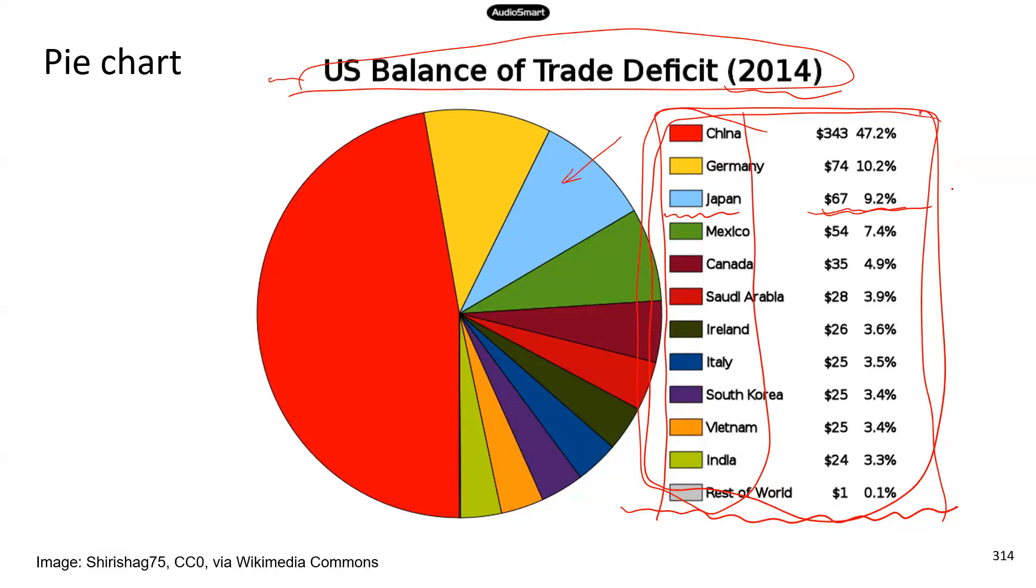So let me just ask you a couple of questions to practice reading this pie chart. First question, which color in the pie chart represents the second largest trade deficit between US and that country? Three seconds.